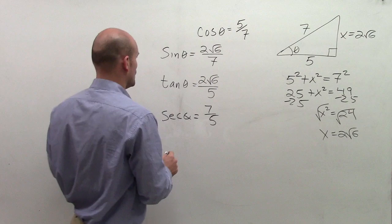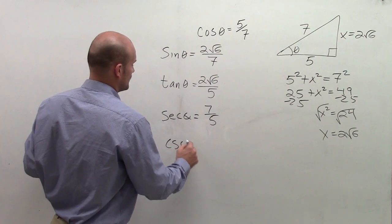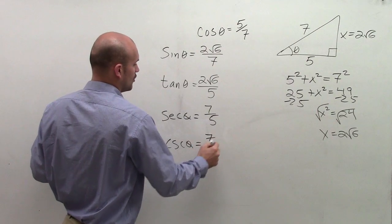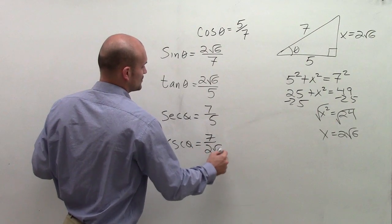Then the reciprocal of sine was cosecant of theta. So to take the reciprocal of that function, I'll have 7 over 2 radical 6.